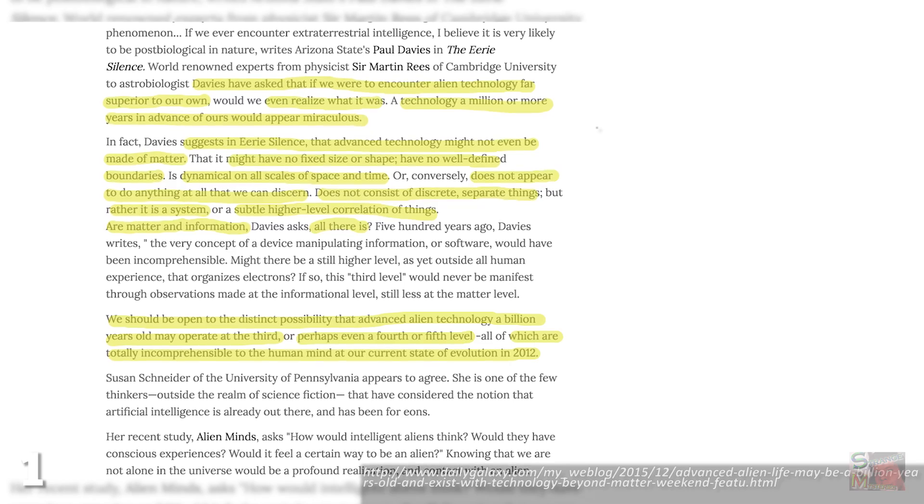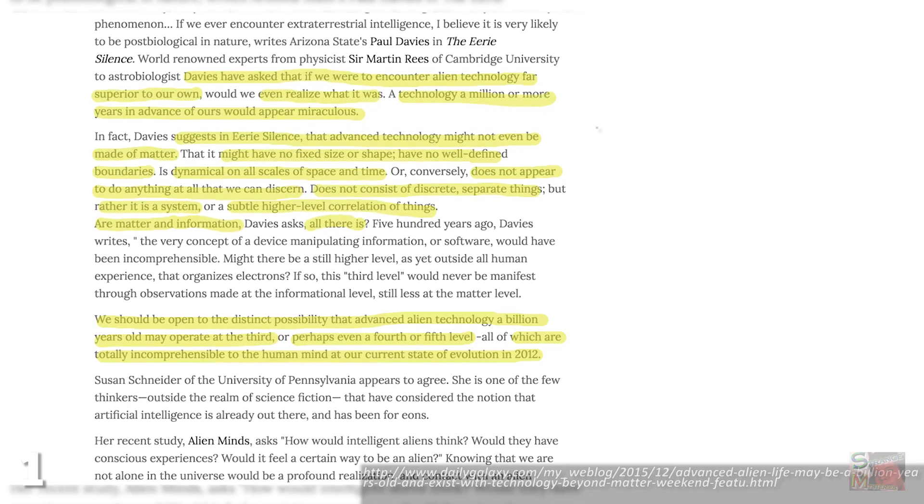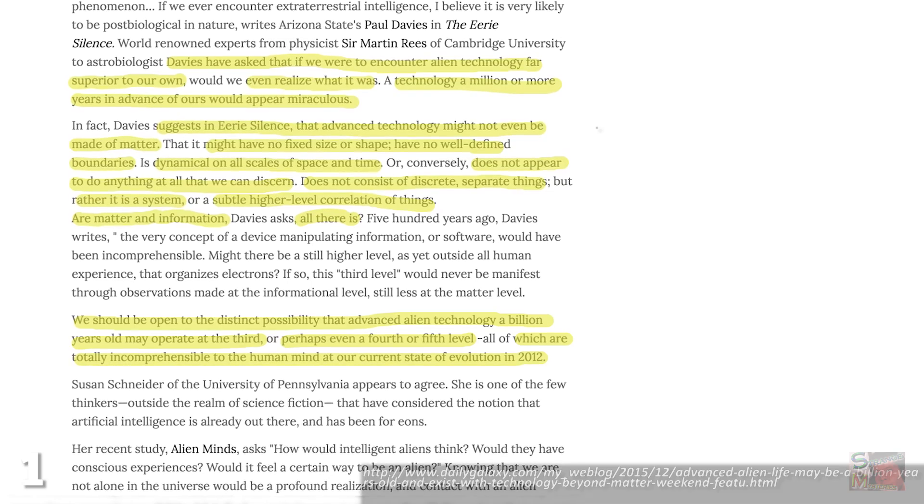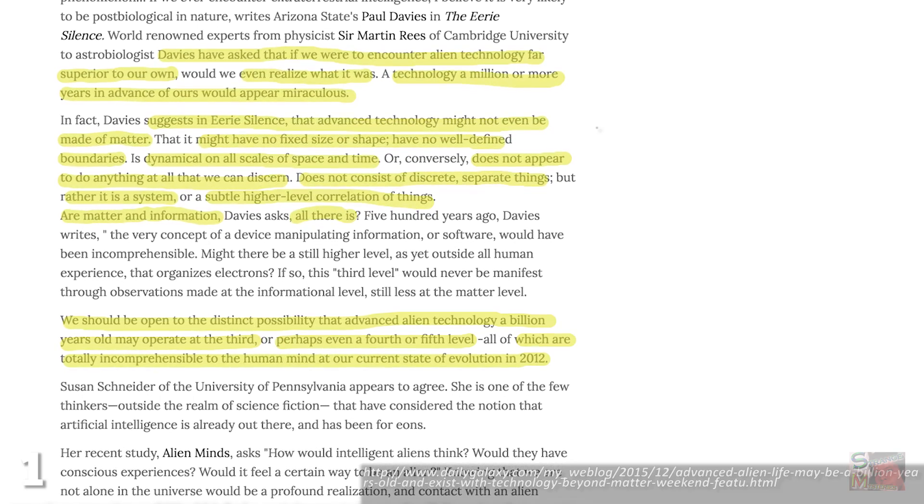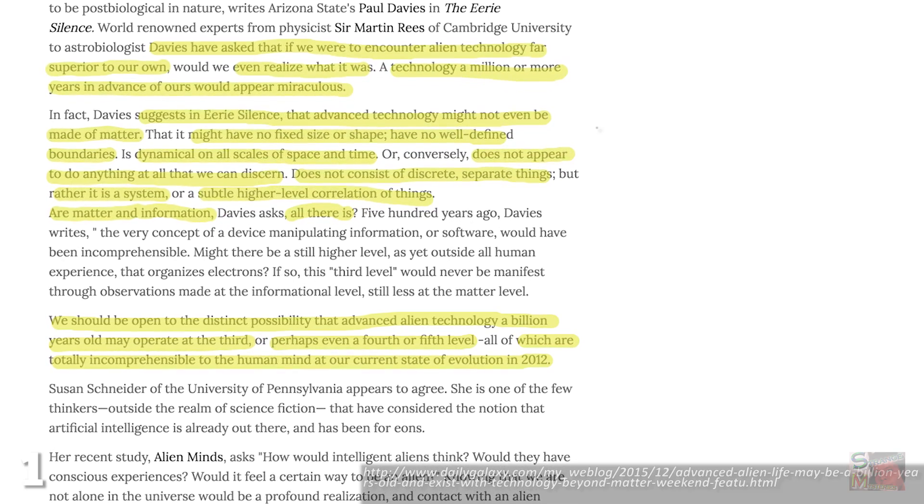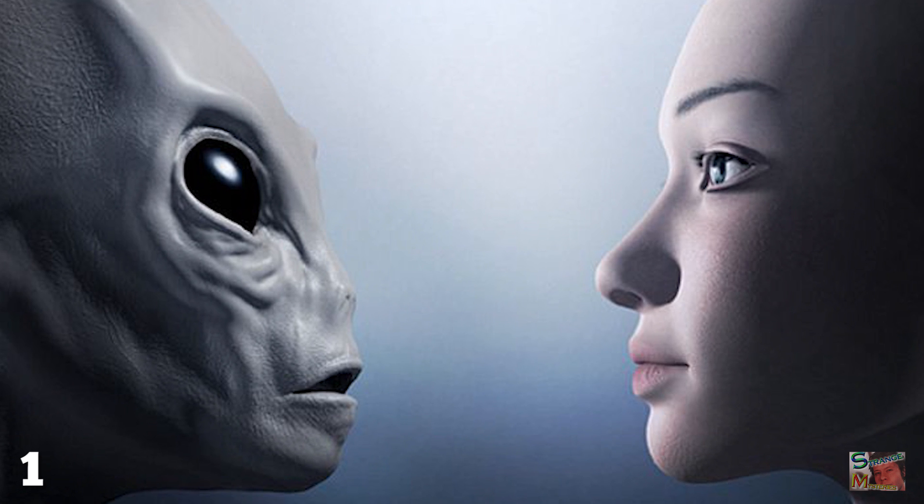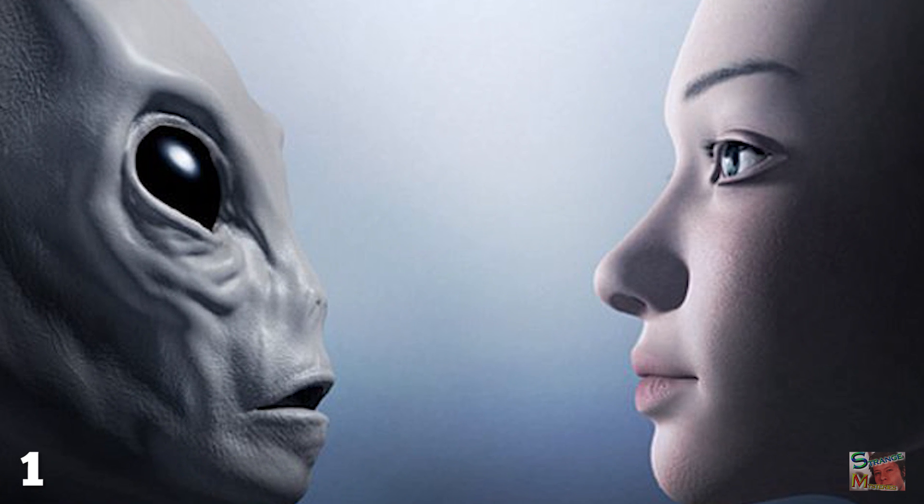Paul Davies believes that advanced technologies and their masters may not have a physical form. They might not be constrained by size or shape, space or time. They won't act like we do and they certainly won't think like we do. Alien civilizations a billion years ahead of us will operate on a level we cannot imagine, comprehend, or detect. And that means we wouldn't know if they were stood right in front of us.